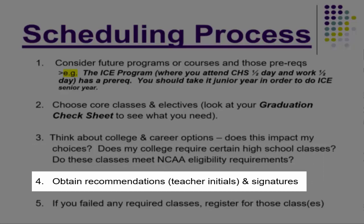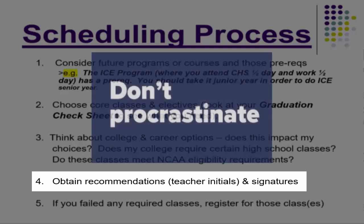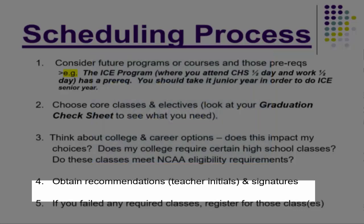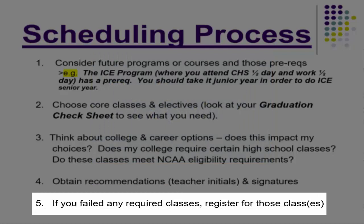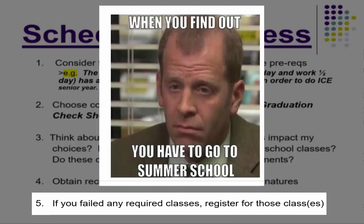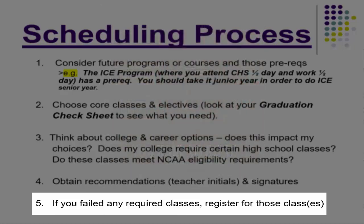Obtain teacher initials and signatures. This is going to take a while, so if these papers are due February 9th, make sure you're getting initials and signatures well before that due date. Number five, if you failed any required classes, register for those classes — whether it's summer school or junior year, make sure you get those taken care of. Again, look at your graduation check sheet.